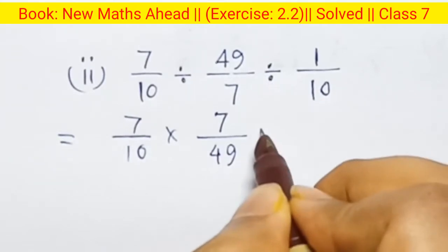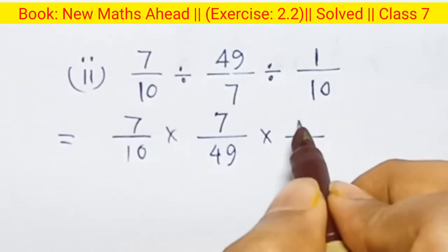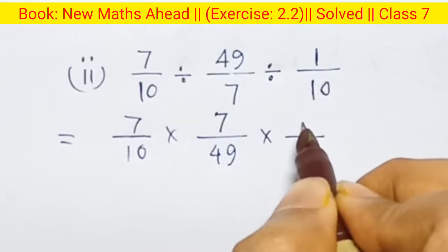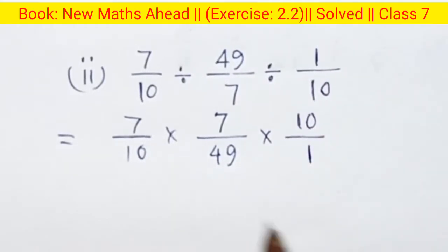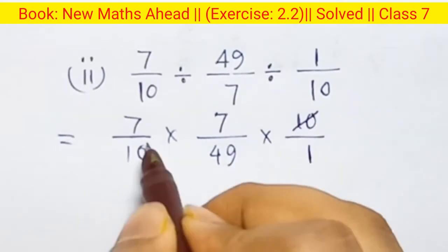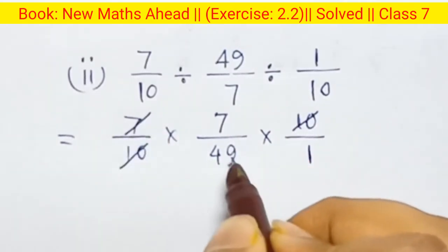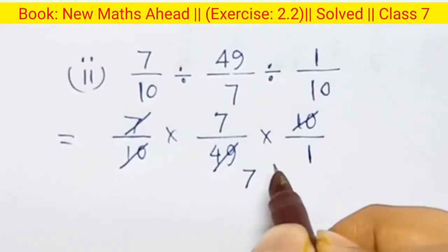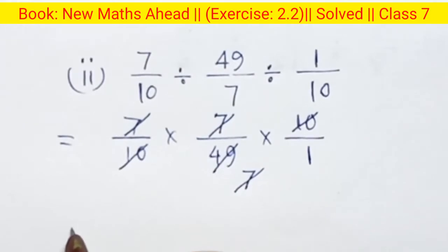Next, divide becomes multiplication. So 1 by 10, or reciprocal is 10 by 1, which is only 10. So A10 and A10 cancel, A7 and A7 cancel — 49. Next, 7 and 7 cancel, answer is 1.